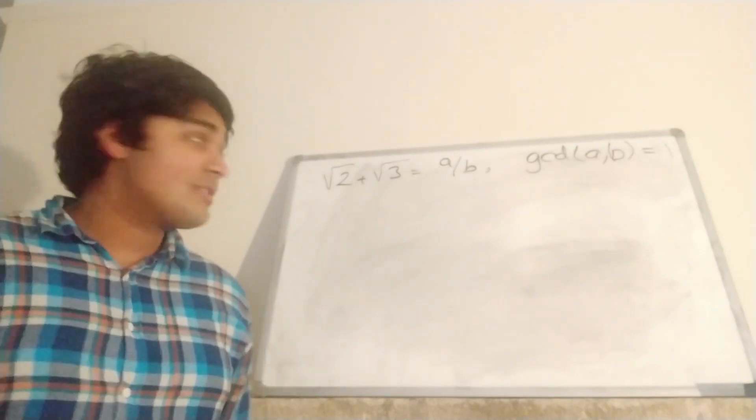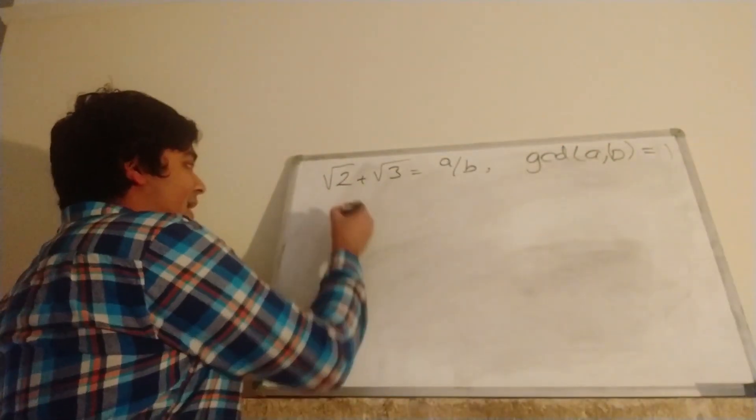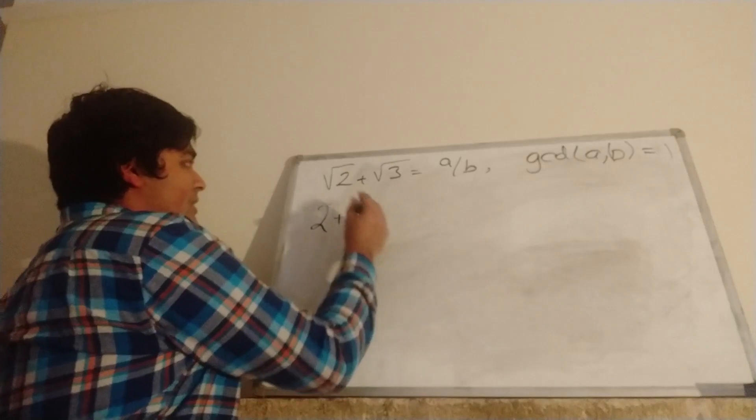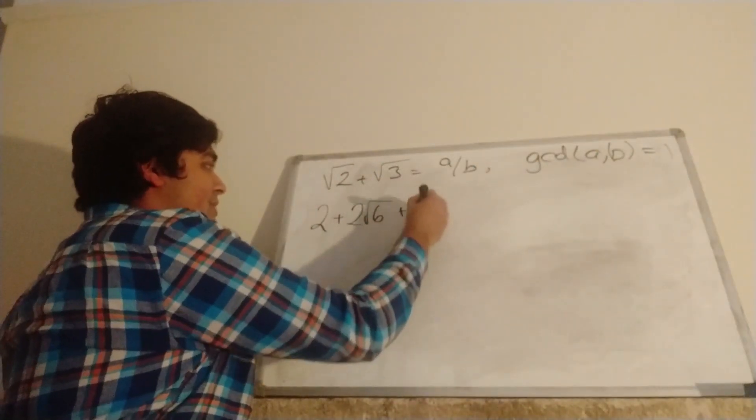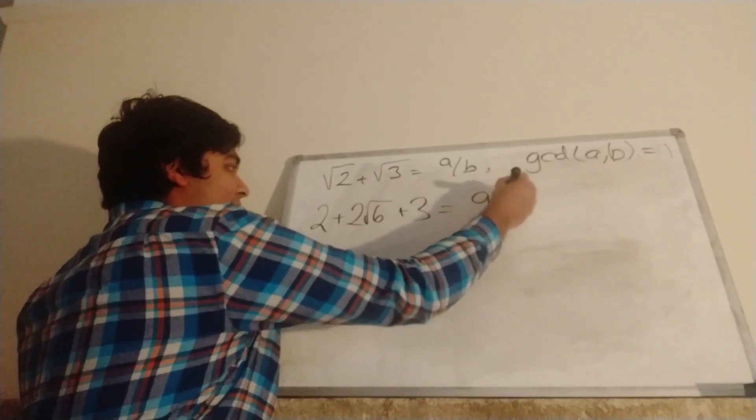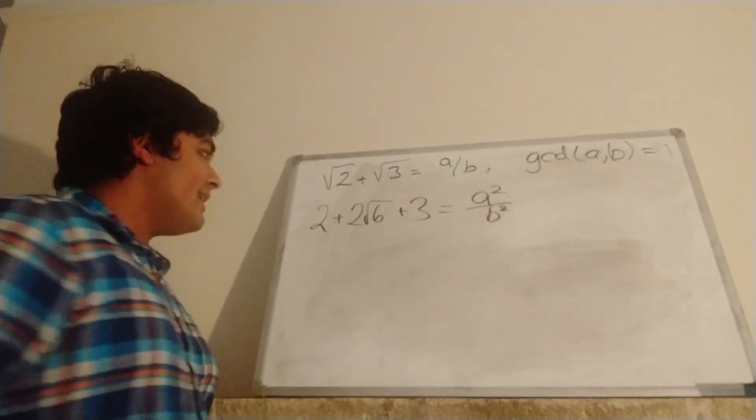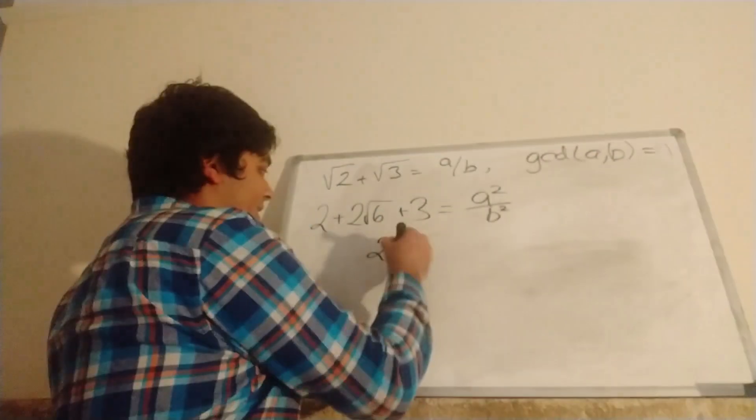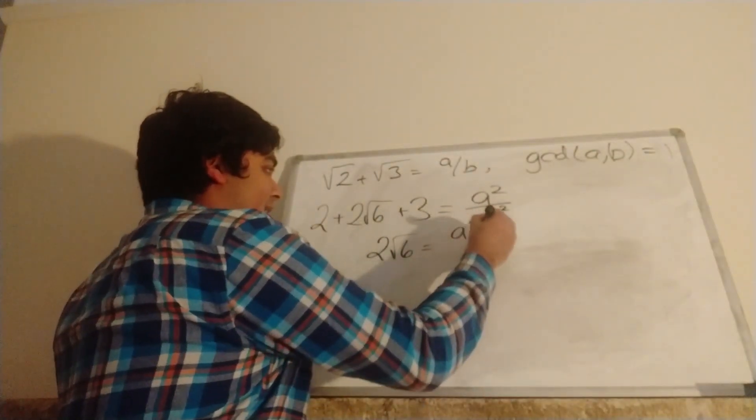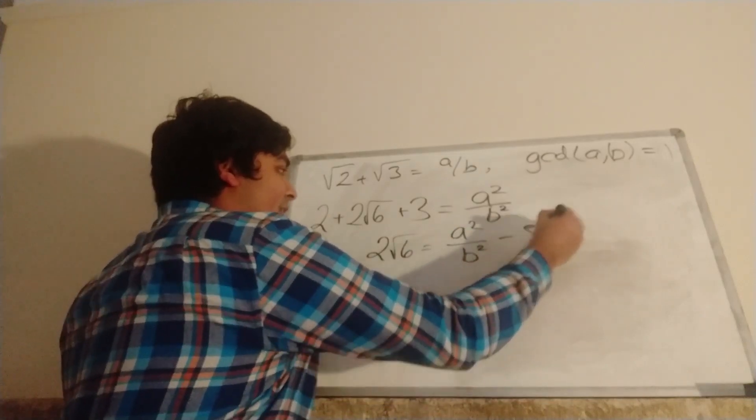The first thing I want to do is just square both sides. So on this side I get √2 squared, which is just 2, plus 2 times √2 times √3, which is just √6, and plus √3 squared, which is 3. And on the right-hand side I just have A²/B². I can bring this 3 and 2 together to make 5 and bring it onto the right-hand side. So I get 2√6 = A²/B² - 5.